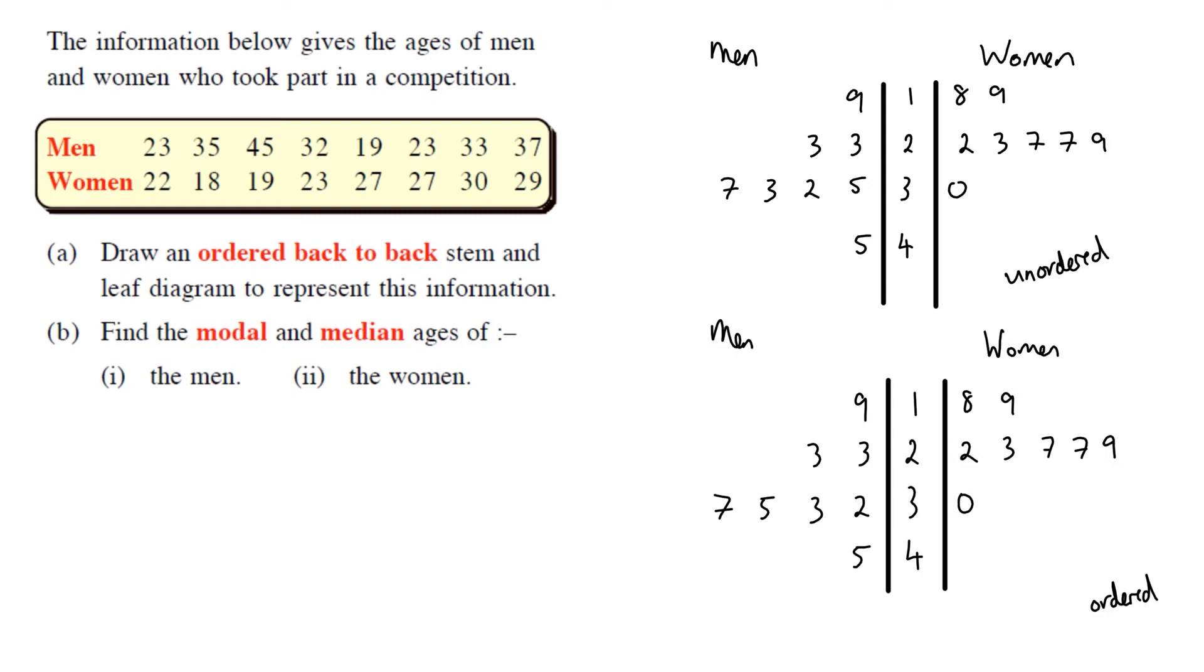What have we forgotten? The key and the n number. So here, I'm just going to put n equals eight on this side and n equals eight on this side. And my key would be, and we just choose any random example. It doesn't even have to be one from the table. I'm going to choose one from the table. I'm going to choose three, nine, zero. That's the 30 for the women. It means 30 years old. So that's your key. You can put it in a box if you want. So that's our back-to-back stem-and-leaf diagram, n numbers for each side and the key to represent the information.